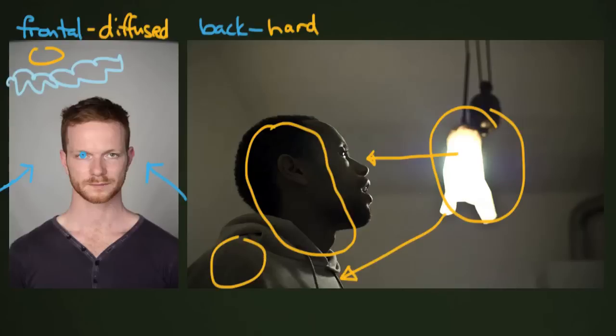Now if I were standing on the other side of Joseph, it might look a little bit more like Alexander over here to the left. But I'm standing behind him. So it's not just the angle of light according to your subject, but also your camera's angle according to your subject and that light.